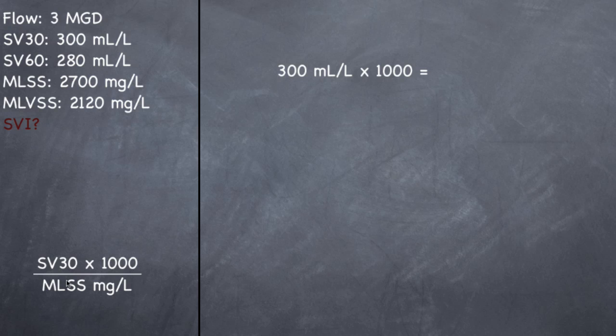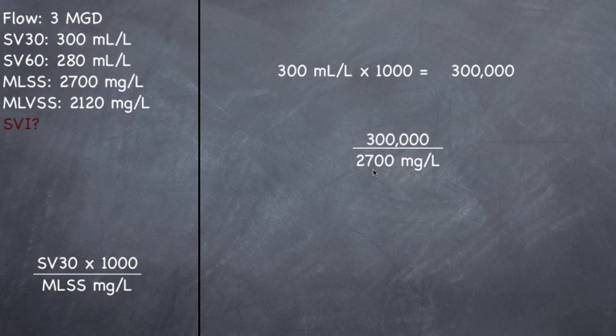So SV30 times 1000, our SV30 is 300 milliliters per liter times 1000 will give us 300,000. Now we divide that number by our mixed liquor suspended solids concentration. 300,000 divided by 2700 equals 111 milliliters per gram. It's kind of a unique form, milliliters per gram.